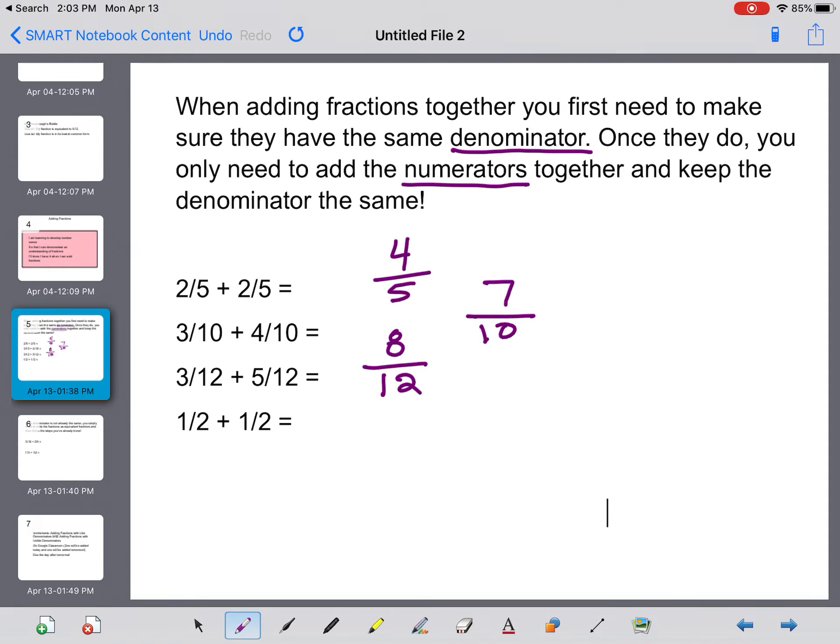Lastly, we have 1 over 2 plus 1 over 2. So I know that my denominator is going to be 2 and my numerator is going to be 1 plus 1, which is 2. Now as you guys may have noticed, when you have a numerator and a denominator that are both the same, then that fraction is actually equivalent to a whole number. It's a whole 1. So you could write it both ways: as 2 over 2 or as 1. Either one would be acceptable.